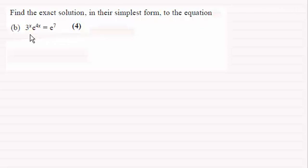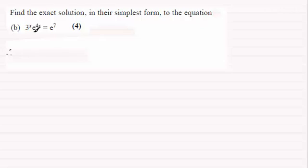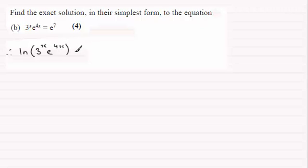There are two ways I can think of tackling this question — I'll show you both. One way would be to take the natural log of both sides of the equation. I say take the natural log because we've got e here, so that's why I would go for natural log. So you've got the natural log of 3 to the power x times e to the power 4x, and that will equal the natural log of e to the power 7.